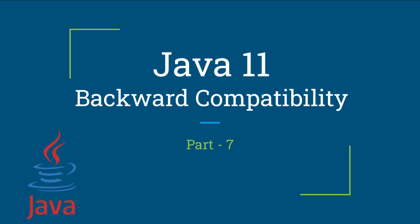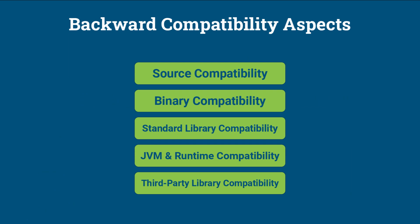You are watching part 7 of the video series on Java 11. Java 11 maintains strong backward compatibility with previous versions, especially Java 8, ensuring that most existing Java applications can run on Java 11 without modification. Here are some key aspects of backward compatibility in Java 11, along with examples.